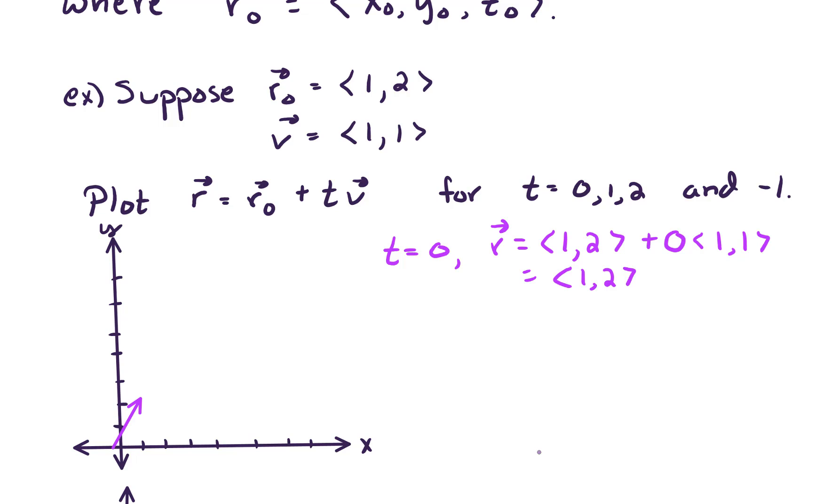Now let's move on to look at T equals 1. When T equals 1, our resulting vector looks like <1,2> plus <1,1>. And adding those vectors up, we get over 2 up 3. Let's plot that vector. So over 2 up 3 looks something like the following.